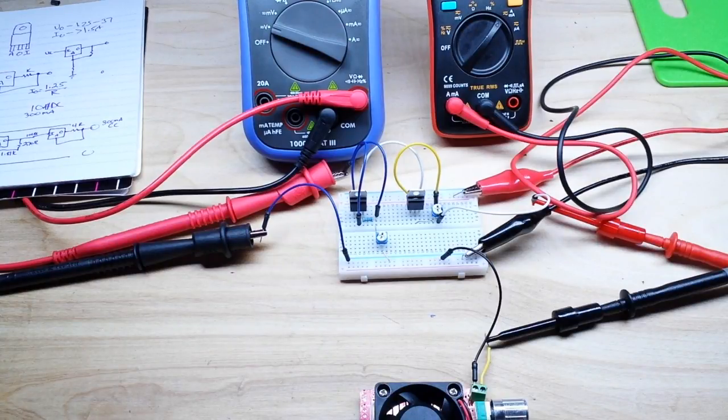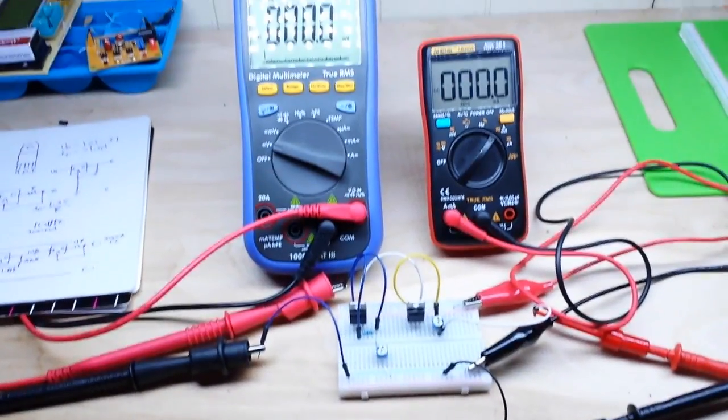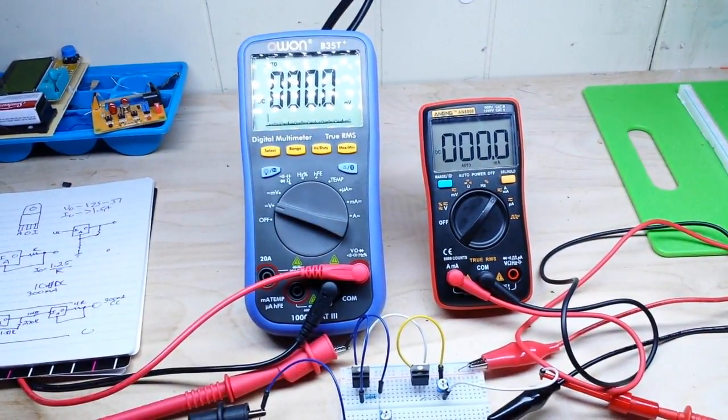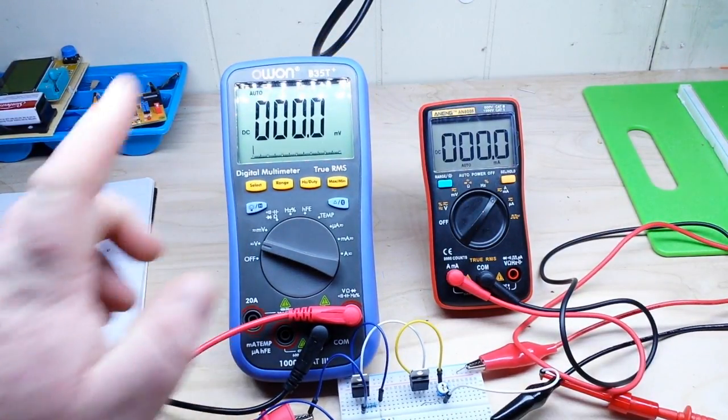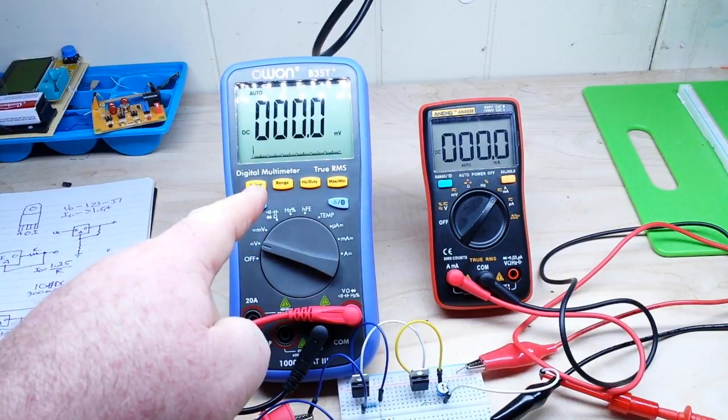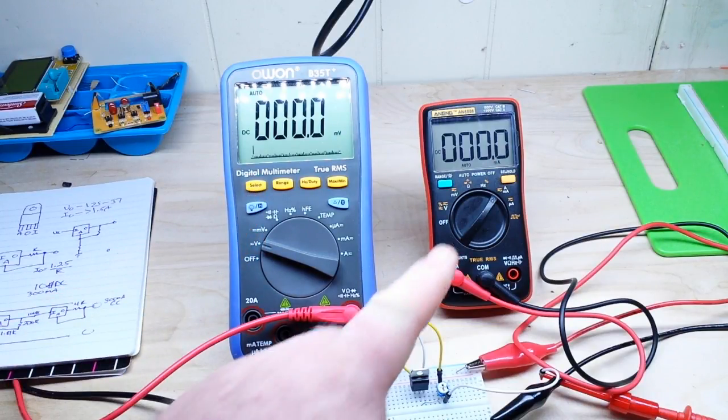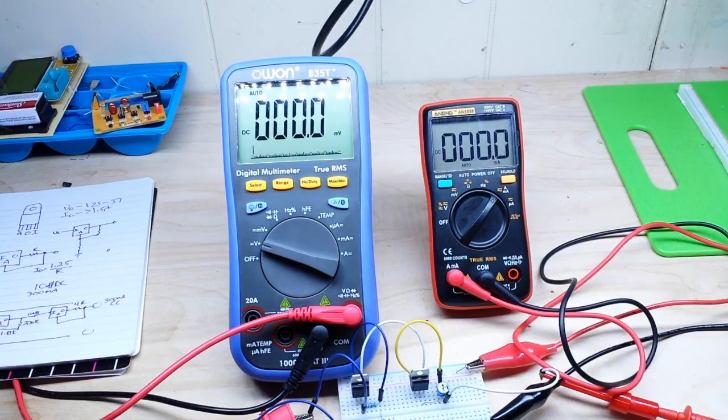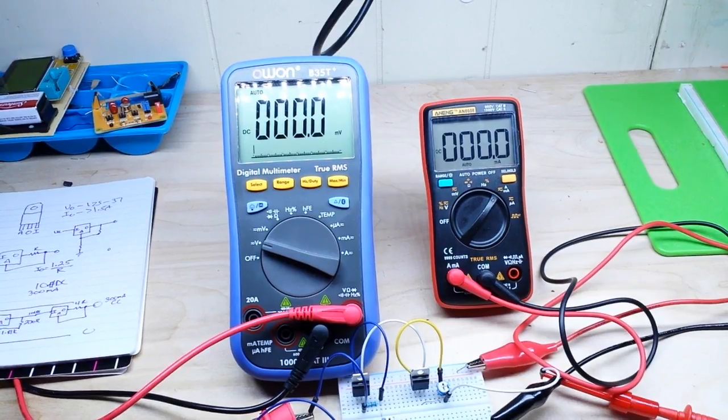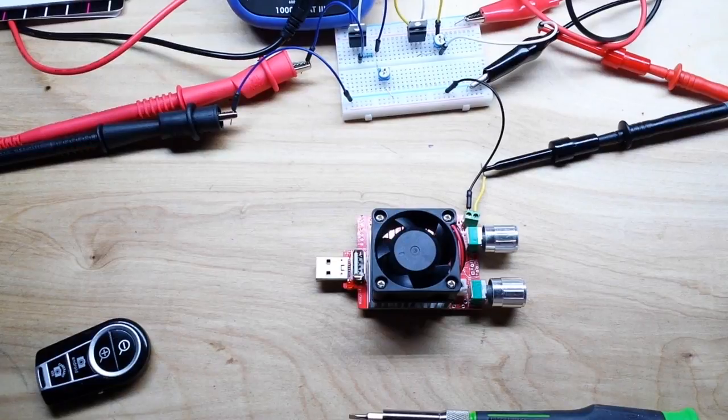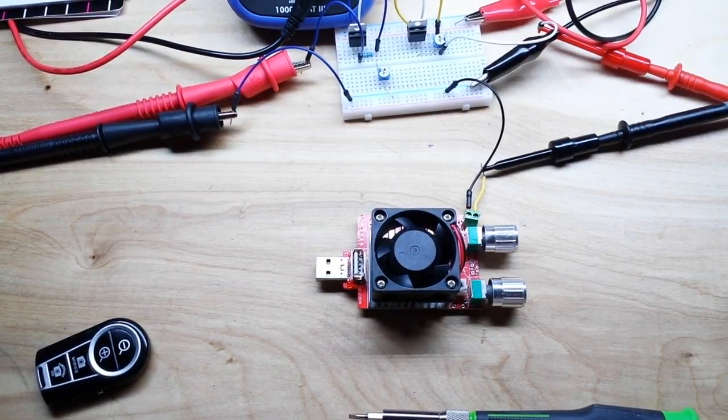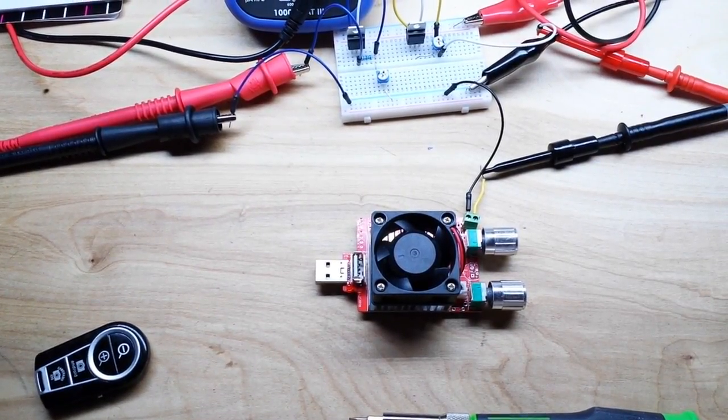So let's zoom out completely here and come up here and you can see these two meters I have set up. Now the Owon is set to measure voltage and the Aneng, I'm just going to call it the 8008, is set up to measure the constant current. And they are going through this variable DC load which I've got set up to try and ask for an amp and a half.